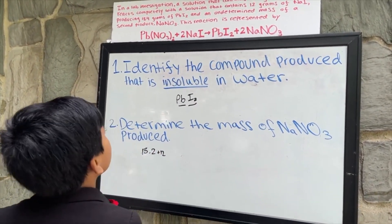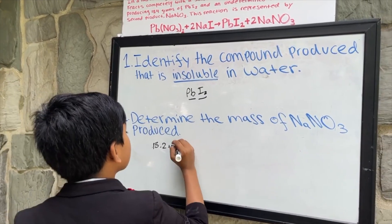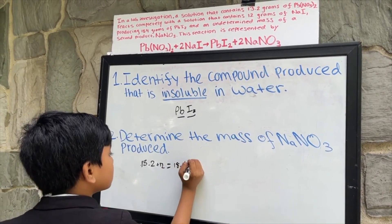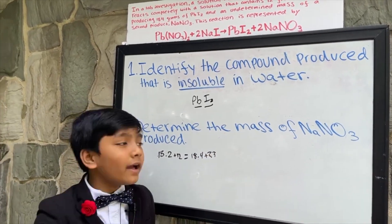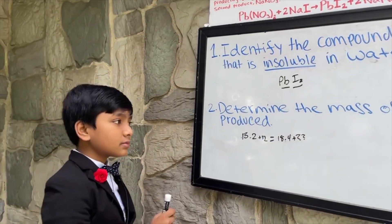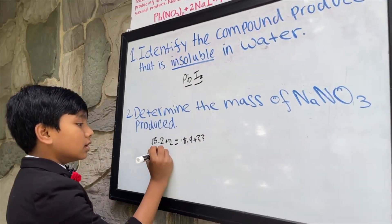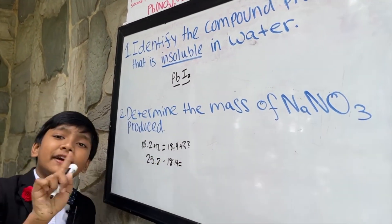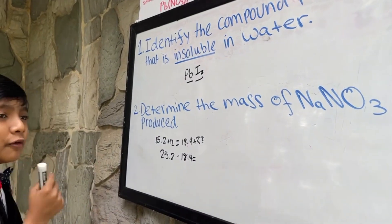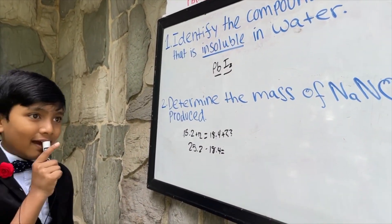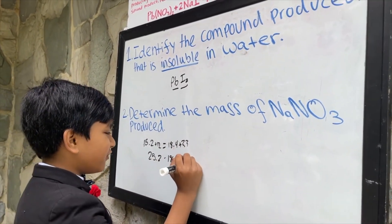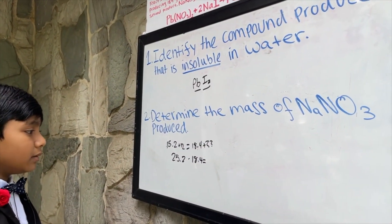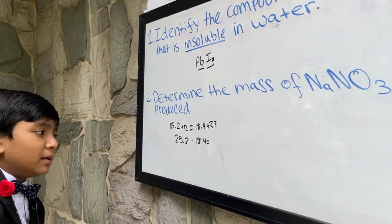You have 13.2 plus 12, which produces 25.2. So 25.2 minus 18.4 equals — let me think about this — 25.2 minus 18.4 gives us the mass of the second product.